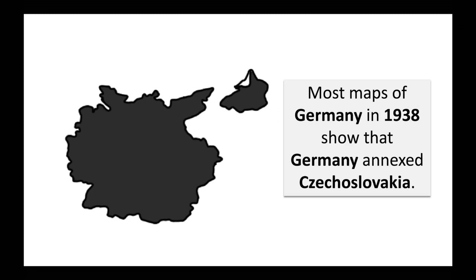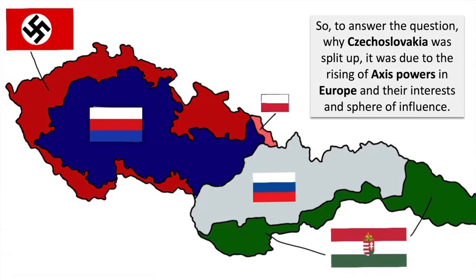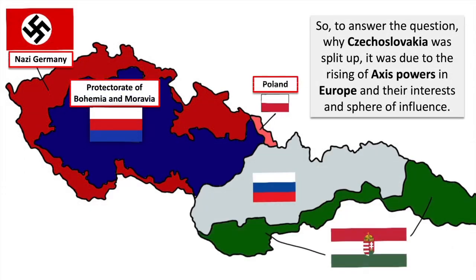Most maps of Germany in 1938 show that Germany annexed Czechoslovakia. In reality, Czechoslovakia was not annexed, but it was a puppet state with Nazi governance and part of the Nazi empire slash Commonwealth. So, to answer the question of why Czechoslovakia was split up, it was due to the rising Axis powers in Europe and their interests and sphere of influence. In the end, this is how Czechoslovakia looked when it collapsed.